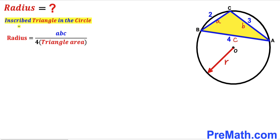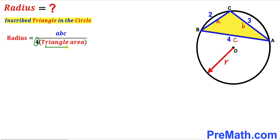Now let's recall the inscribed triangle in the circle formula. The radius of the circle is going to be equal to the product of side lengths a, b, and c divided by 4 times the area of the inscribed triangle.